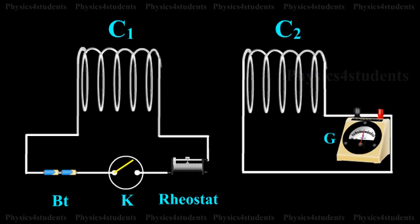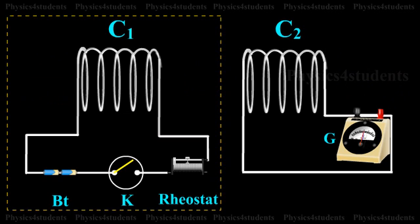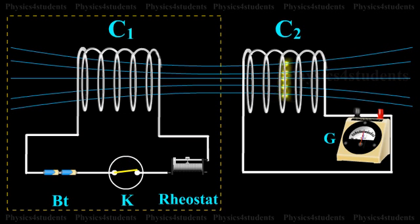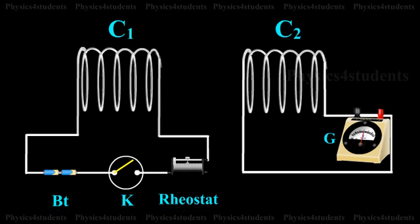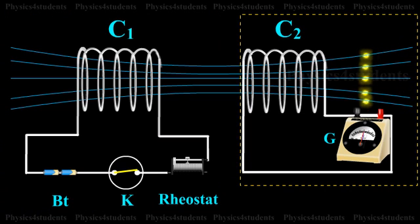This is because when the current in C1 increases from zero to a certain steady value, the magnetic flux linked with the coil C1 increases. Hence, the magnetic flux linked with the coil C2 also increases.